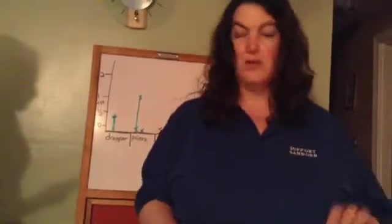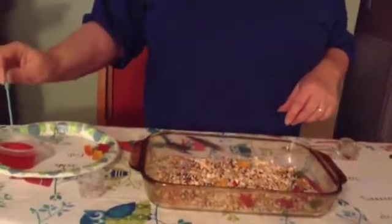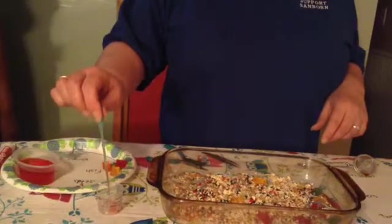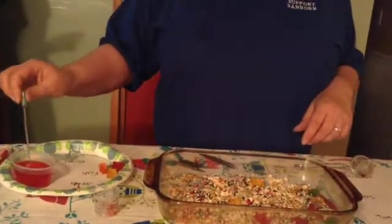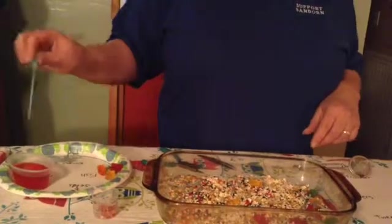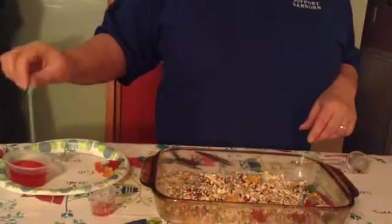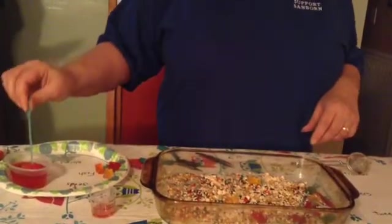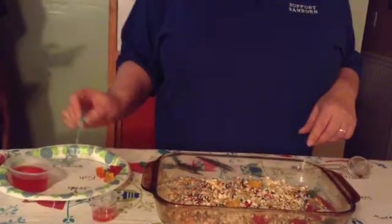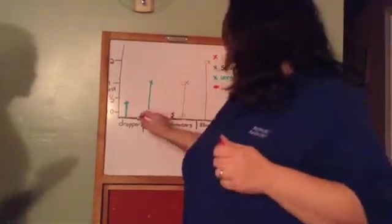Now we're going to try what the dropper is really going for — we're going to try nectar. So here's the nectar. That is doing the job! Definitely the tool to get the nectar out of the flowers — looks like a hummingbird. We must eat a lot, because I'm getting a lot. And our time is up. We have almost a teaspoon of nectar with our dropper. That was pretty good.